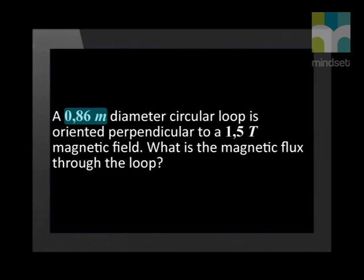Let's do an example where we can apply this new equation. Please do this with me and use a calculator so that you can see how to find the answer. A 0.86 meter diameter circular loop is oriented perpendicular to a 1.5 tesla magnetic field.